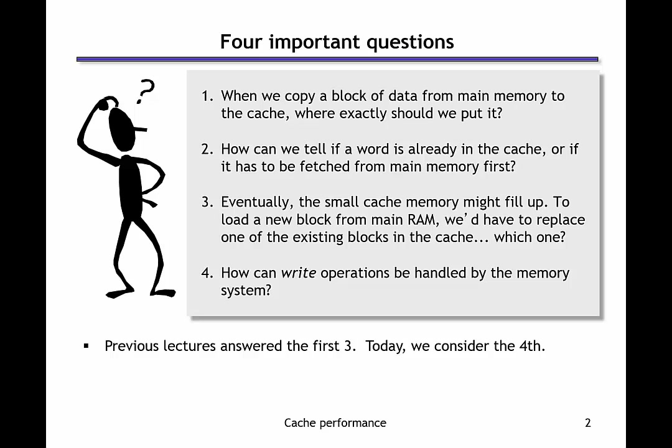When I first introduced caches, I introduced four questions about how a cache would work. The first question was: when we bring data from memory into the cache, where should we put it? The answer was that we define something called an index, which says where in the cache it's going to go, whether it's a direct map or a set associative cache.